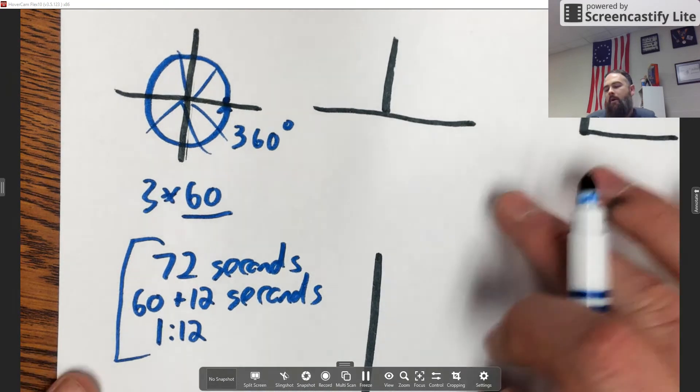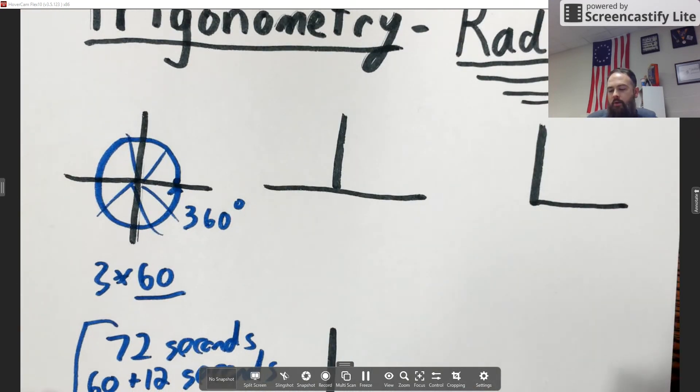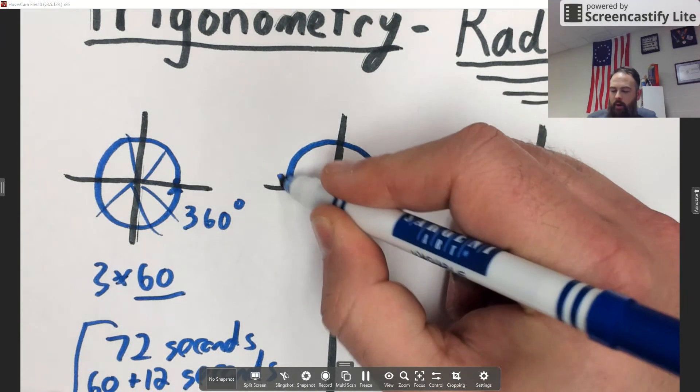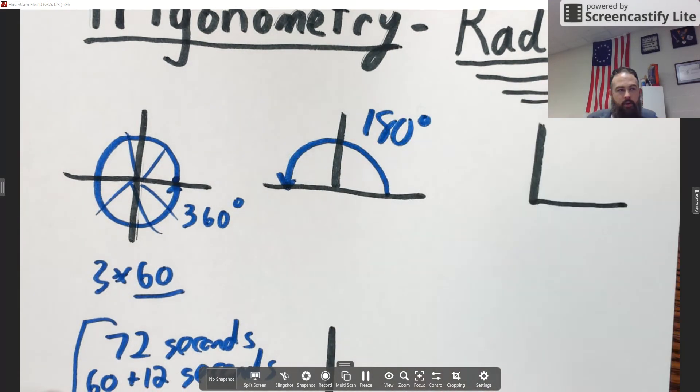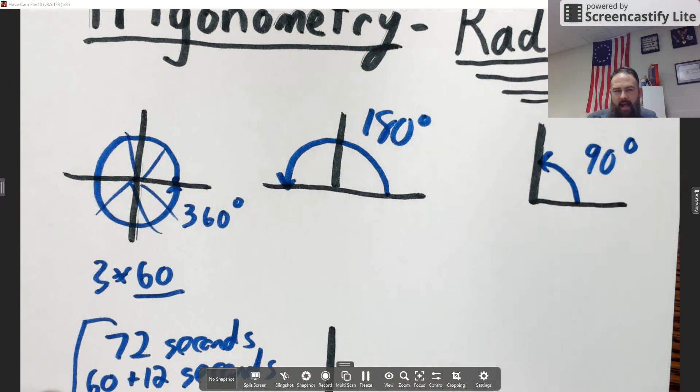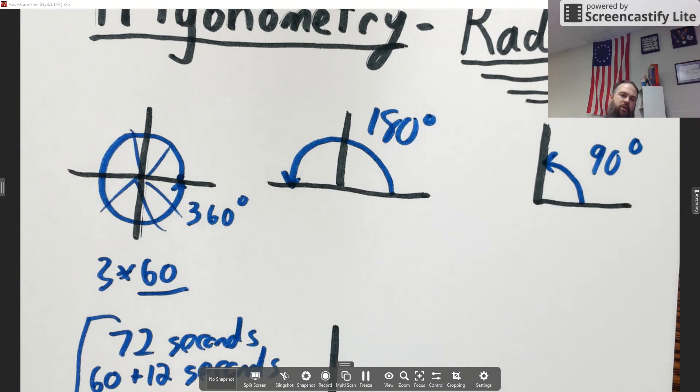We still use that. Degrees are based on a very similar idea. Now we could come in and do portions of that 360 degrees. So if we started here and went halfway around, that would be 180 degrees. If we went a quarter of the way around, that is 90 degrees, our classic right angle.